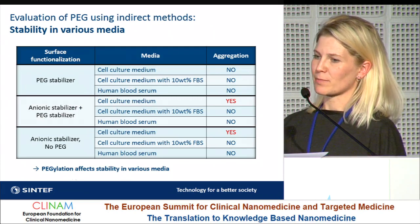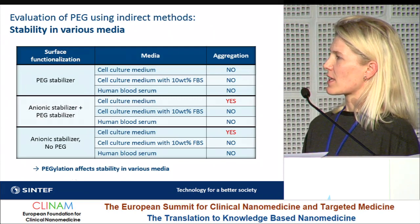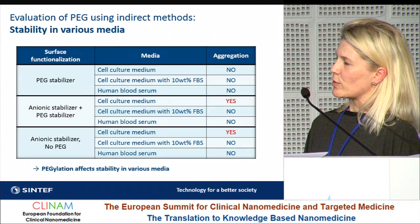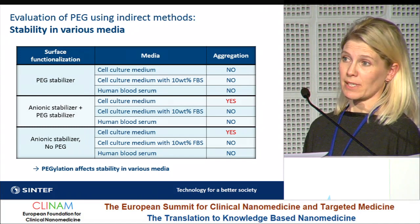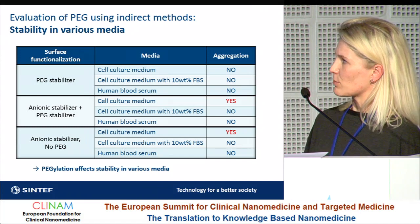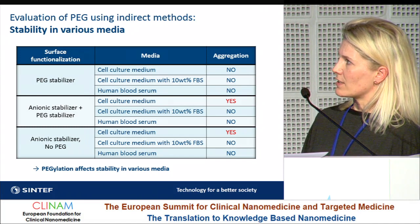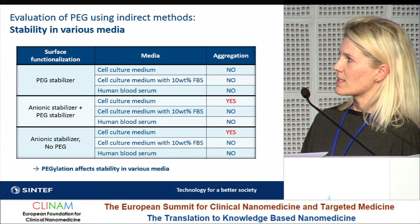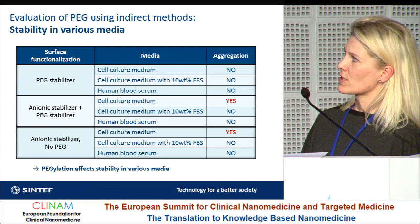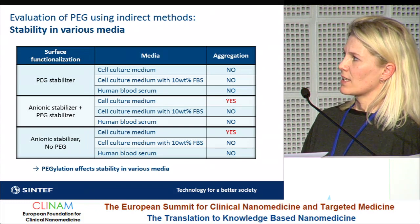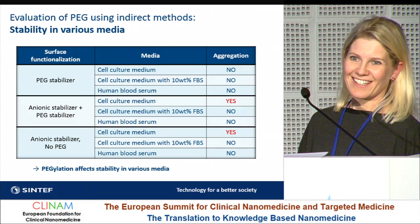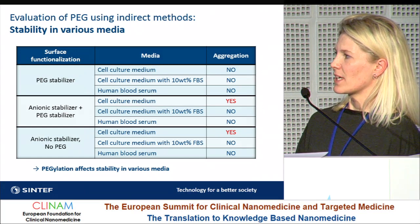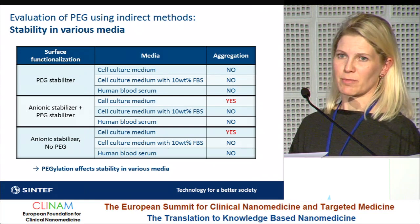Moving to indirect methods, one very easy approach is to look at the stability of particles in various media and biological fluids. We have been looking at cell culture medium with added FBS and human blood serum. Not surprisingly, stability depends on the PEG, so pegylation affects stability in various media. This is a very simple method that can be applied to all kinds of different particles.